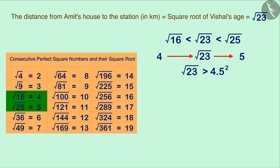Here, we can guess that 23 is greater than the square root of 4.5. The square root of 4.5 is 20.25, which is smaller than 23, which can be verified.